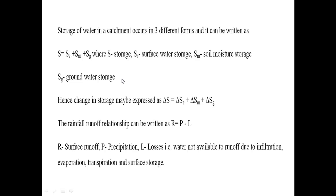The change in storage is expressed as delta S equals delta Ss plus delta Sm plus delta Sg. The rainfall-runoff relationship is R equals P minus L, where R is surface runoff, P is precipitation, and L represents losses — water not available for runoff due to evaporation, transpiration, and surface storage.